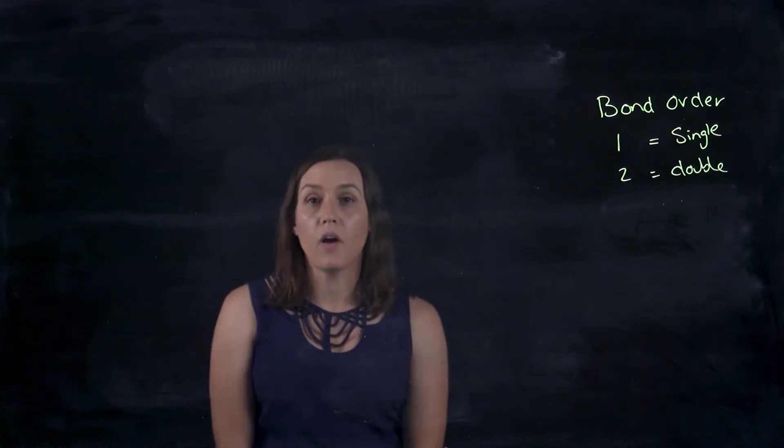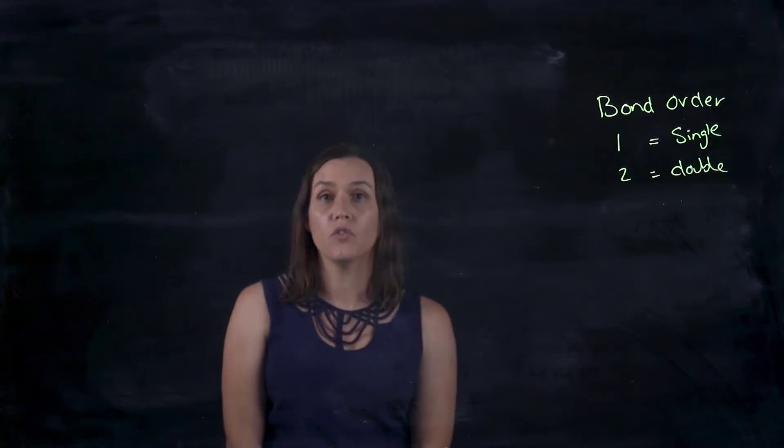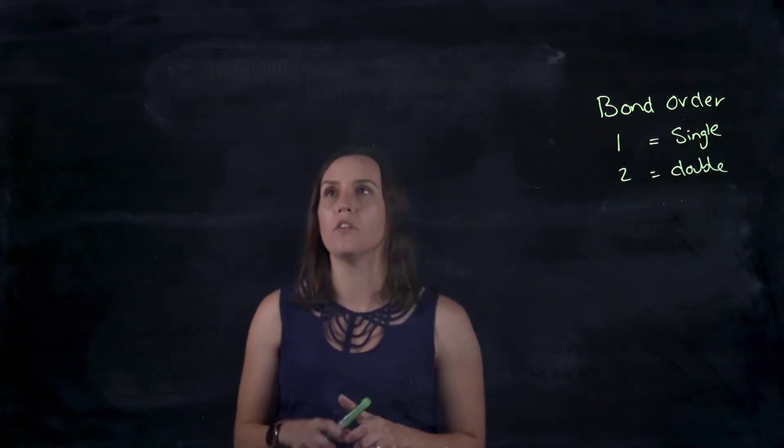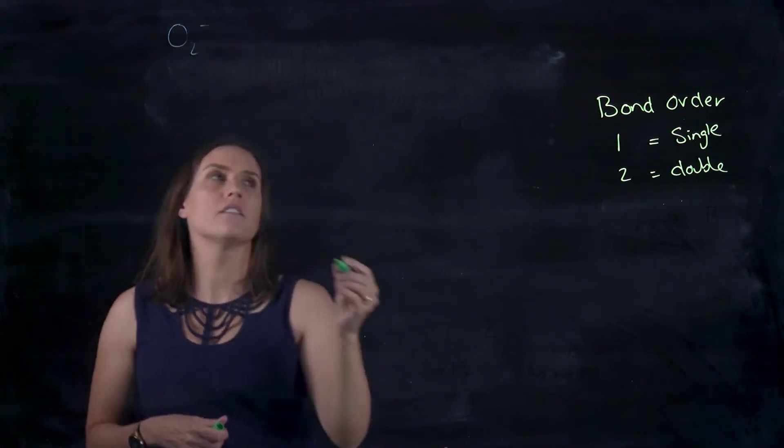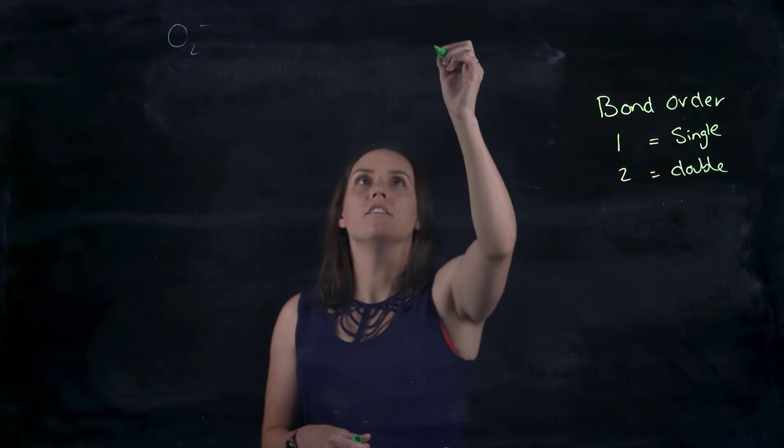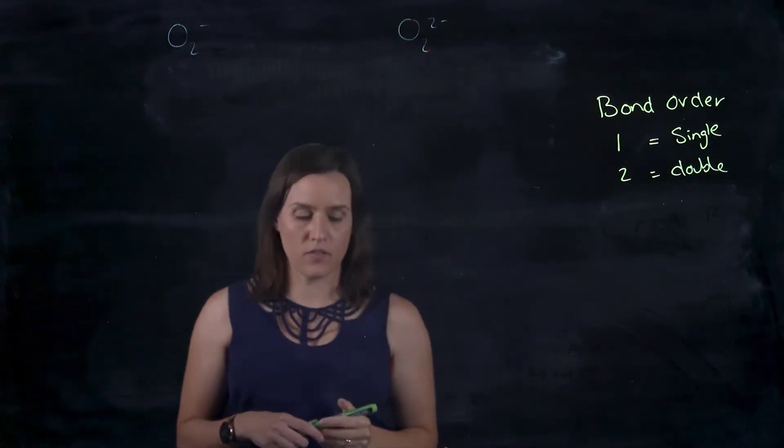Okay, so now I want to look at O2 minus and O2 2 minus and compare the two molecular orbitals in the bonding order. So O2 minus and O2 2 minus are the ones of interest.